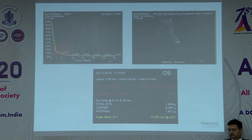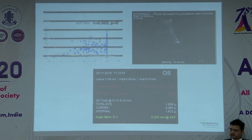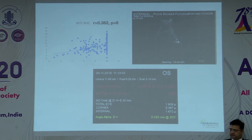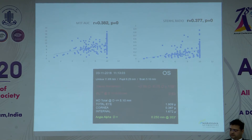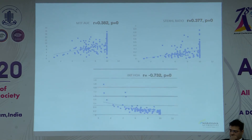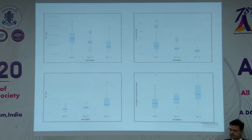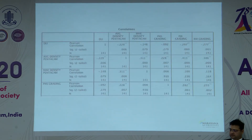Regarding quality of vision: the modular transfer function was directly correlated to the DLI. The Stirl's ratio, which is contrast sensitivity, was also directly related. Internal higher-order aberrations were inversely related to the DLI. Cataract grading on the eye trace gave a higher grading for people with DLI less than 5. An incidental finding was that, while maximum density is typically used as the Pentacam parameter, our study found that average density correlated best with the DLI.